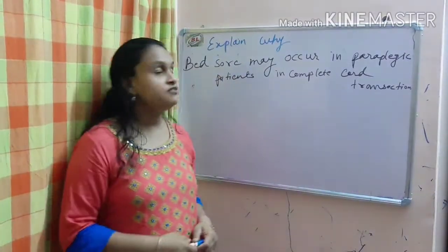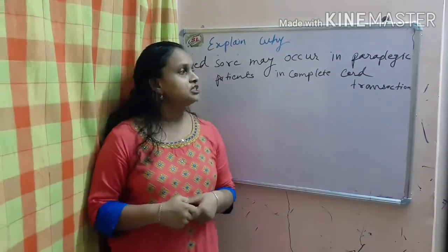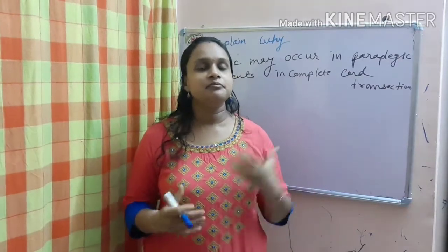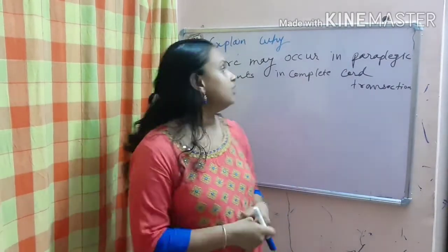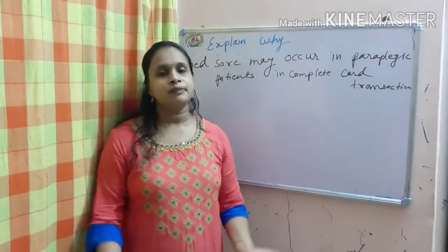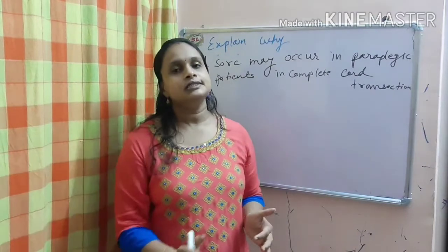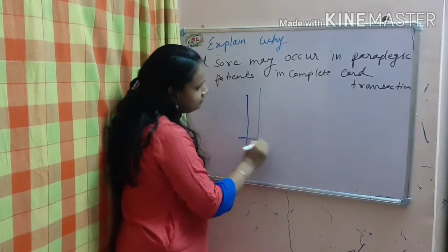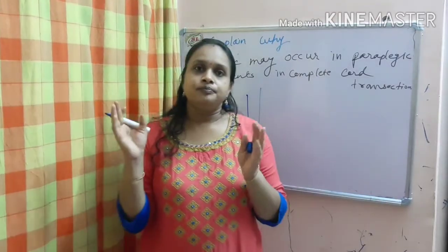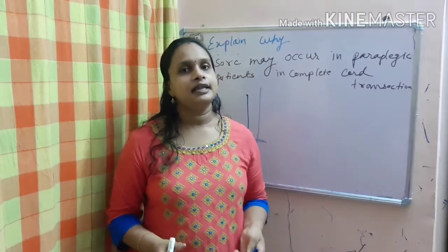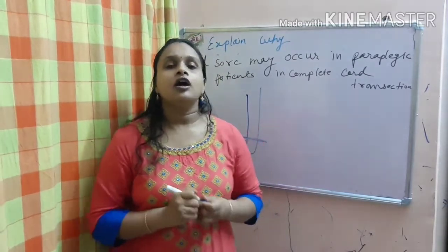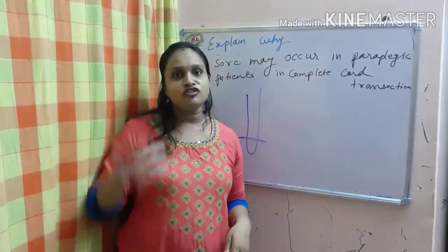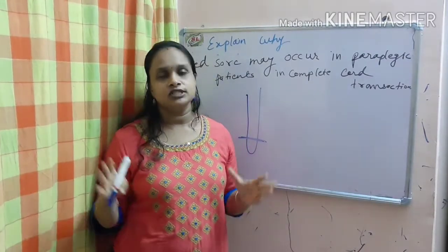Next question is: explain why bed sores may occur in paraplegic patients with complete cord transection. What is paraplegia? Paraplegia is paralysis of both the lower limbs. When the spinal cord gets transected at some lower level, both lower limbs get paralyzed — that condition is known as paraplegia. Along with paraplegia, there is complete sensory loss below that level and fall of blood pressure due to loss of sympathetic vasoconstrictor tone.